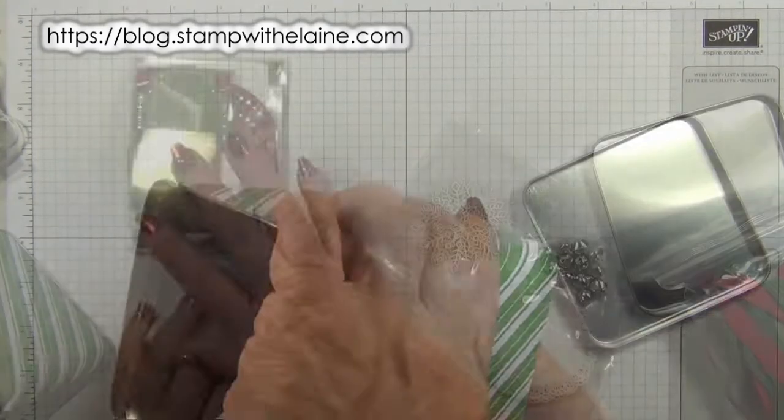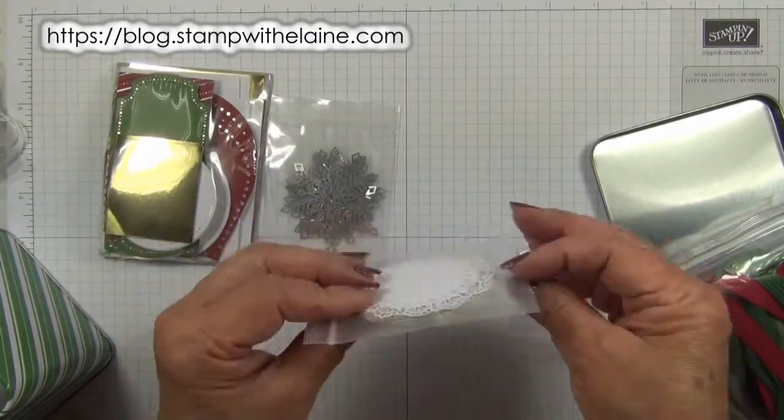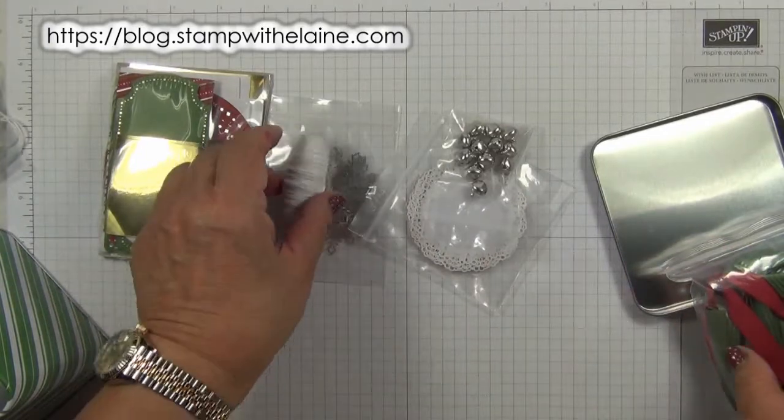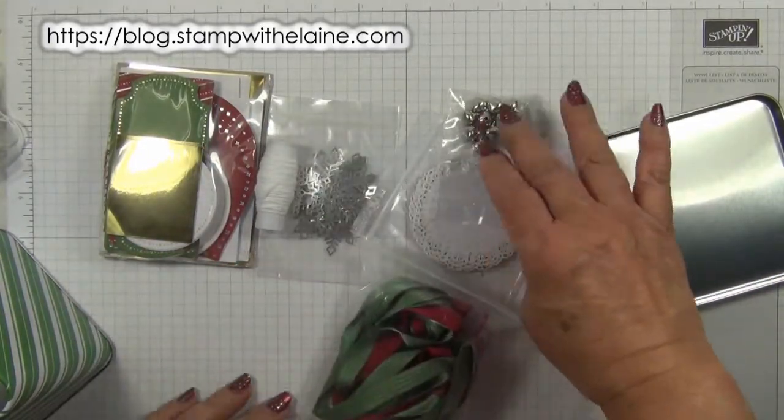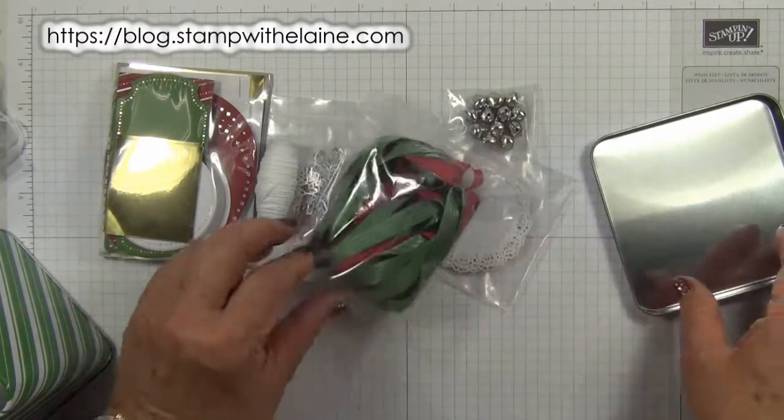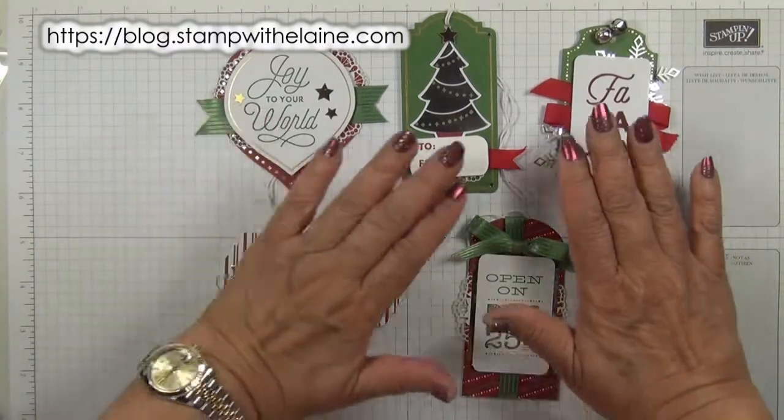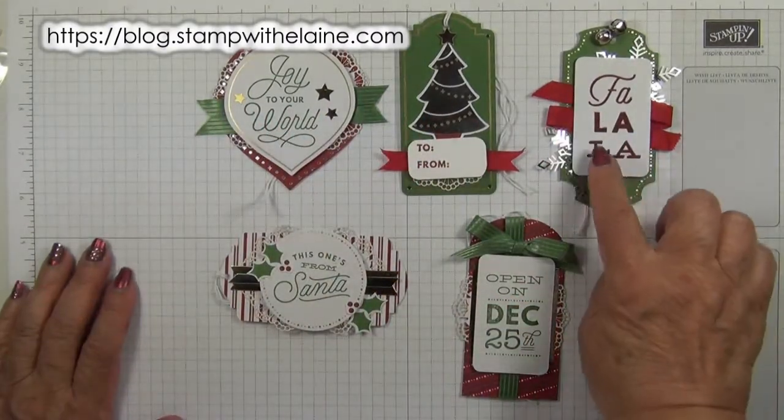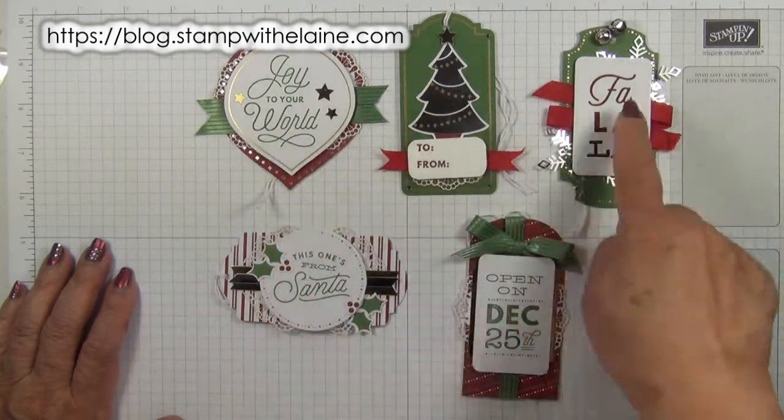It includes 30 pre-printed tags with all the embellishments that you need to make them up with, including the ribbon, bells, doilies and foil cards. I did this with my club ladies this month. There are six of each in five designs.